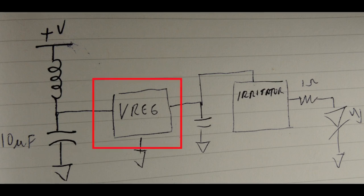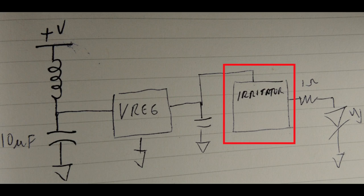The two integrated circuits basically are in series. One's a voltage regulator, and one is something I will call the irritator. Basically, a voltage regulator just generates a nice stable voltage, and then the irritator goes in and chops it up, going through those three different modes.